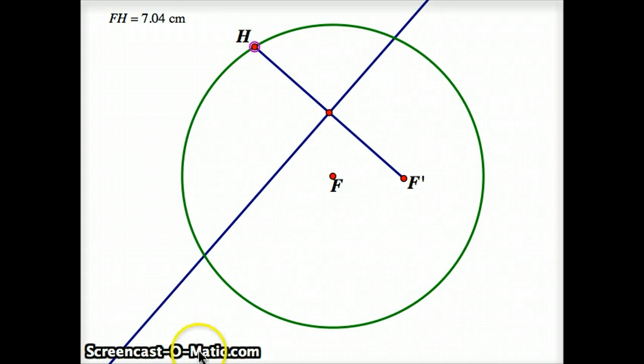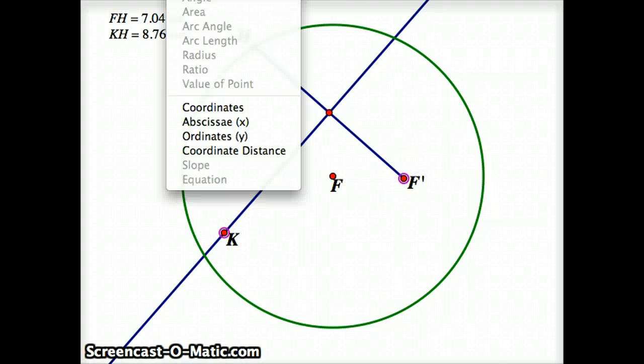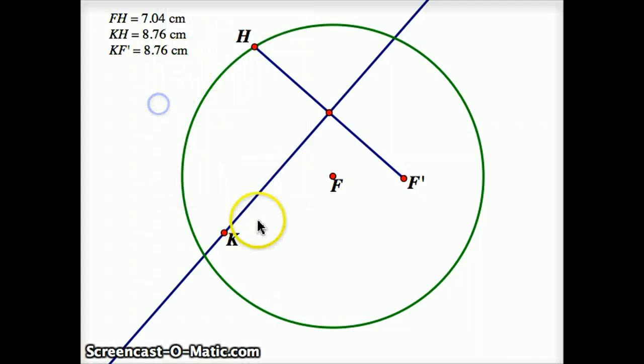Now there's a property of perpendicular bisectors, that if I have a point on a perpendicular bisector, I have this point K, which is on the perpendicular bisector, and if I measure K to H, it's 8.76. If I measure K to F prime, it's also 8.76. So any point on a perpendicular bisector is, as we say, equidistant from the two endpoints of that segment.